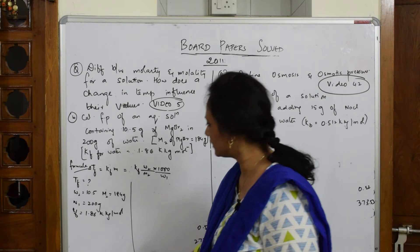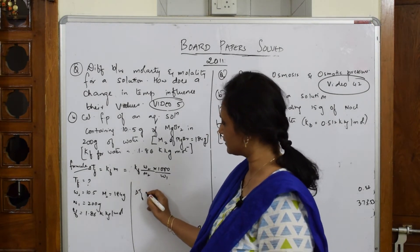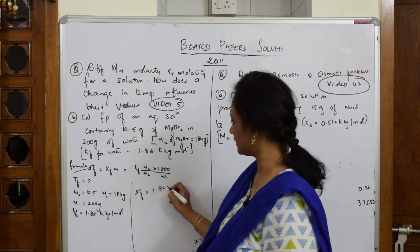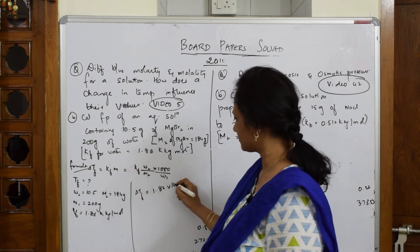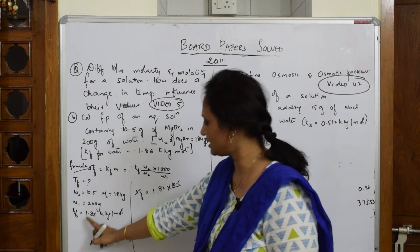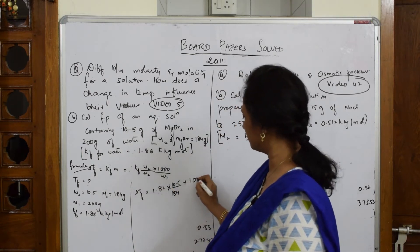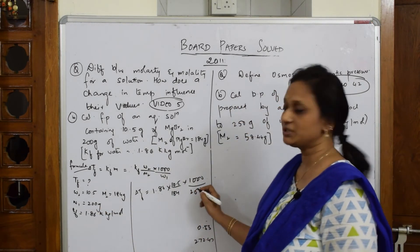Kf is given to me as 1.86 K kg mole inverse. Now I can directly apply the formula. Delta TF equals Kf, which is 1.86, into w2, which is 10.5 grams.